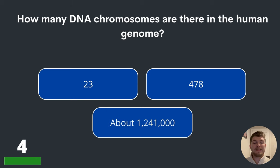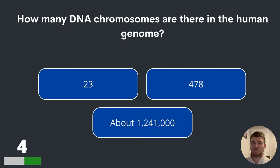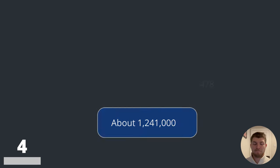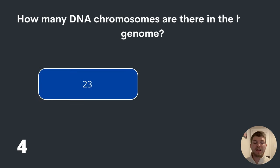Question four. How many DNA chromosomes are there in the human genome? 23, 478 or about 1,241,000? The answer is 23.